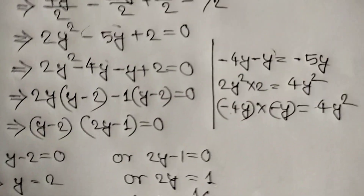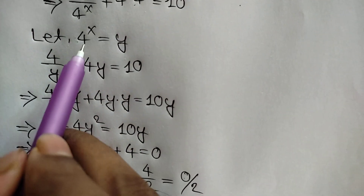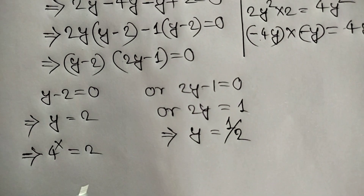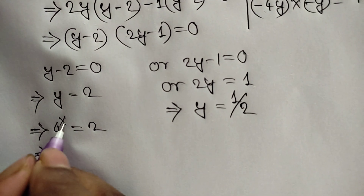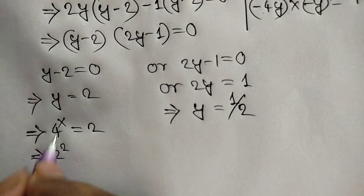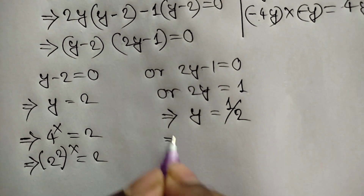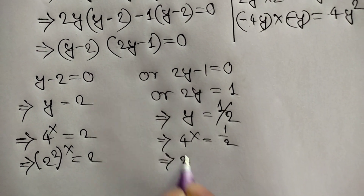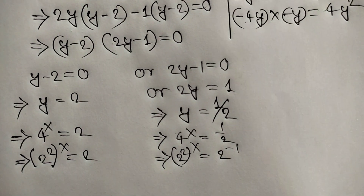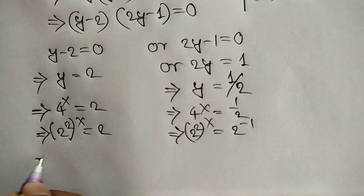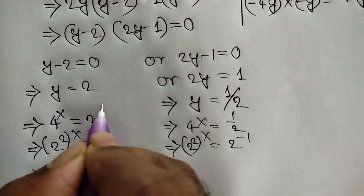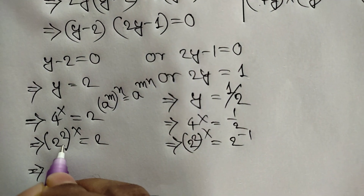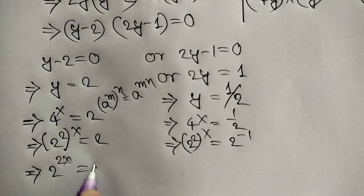Remember, we let 4^x equal y, so y equals 4^x. For case one: 4 to the power x equals 2. Since 4 equals 2 squared, we have 2 squared to the power x equals 2 to the power 1, so 2^(2x) equals 2^1. For case two: 4 to the power x equals one half, which means 2 squared to the power x equals 2 to the power negative 1, so 2^(2x) equals 2^(negative 1).